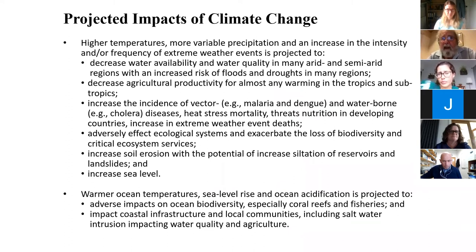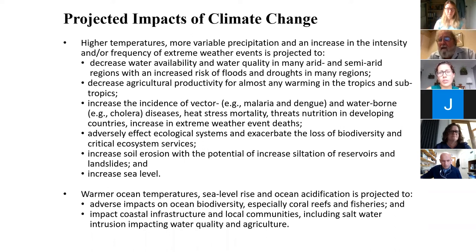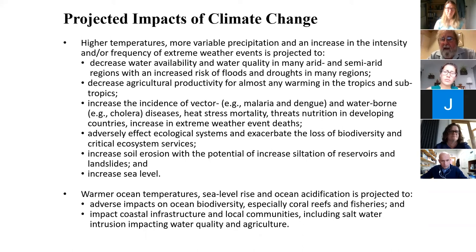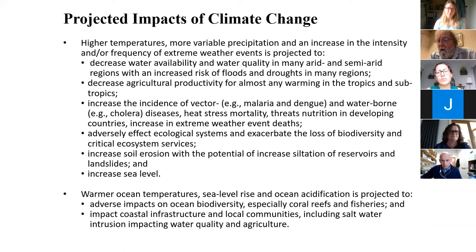Projected impacts of climate change include: reduced water availability and quality in arid and semi-arid regions, declining agricultural productivity especially in the tropics and subtropics, increasing vector-borne and water-borne disease, increasing heat stress mortality, decreased nutrition from agriculture in developing countries, and an increase in extreme weather events such as floods and droughts. In the oceans, three key issues are warm ocean temperatures, sea level rise, and ocean acidification — all affecting biodiversity.